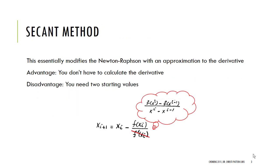This method that we're looking at now, the secant method, is a modification of the Newton-Raphson technique. What we're going to do is we're going to approximate the derivative.